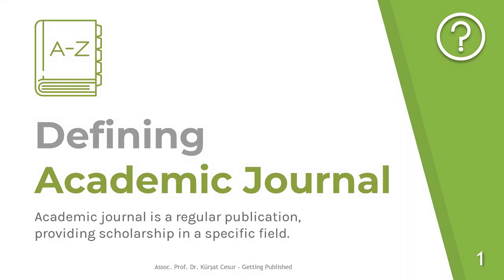Let's first define an academic journal. An academic journal, also known as a scholarly journal, is a regular publication that provides some kind of knowledge in a specific area of study. Academic journals are persistent, open platforms for the presentation, inspection, and discussion of research. Typically, they are peer-reviewed or refereed.